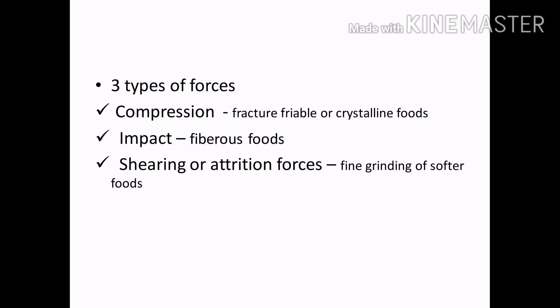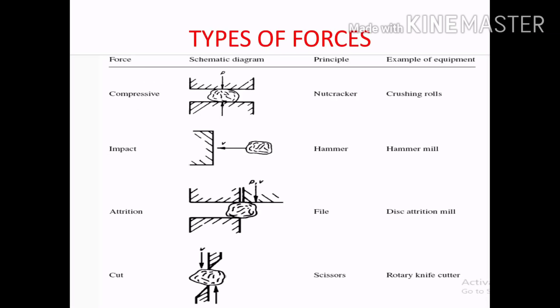Impact is applied by force. It is used for fine grinding of softer foods. Compression is a type of force — for example, crushing rolls.